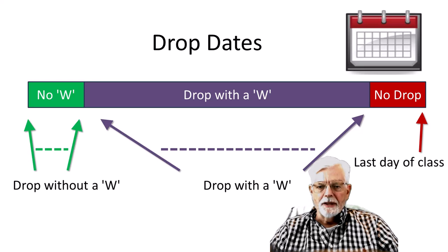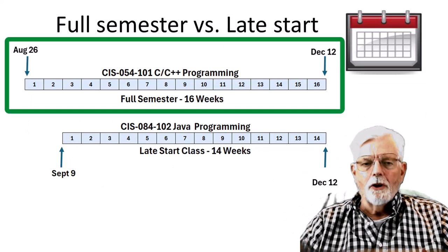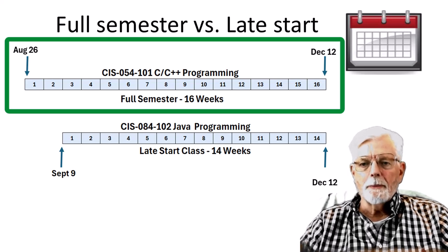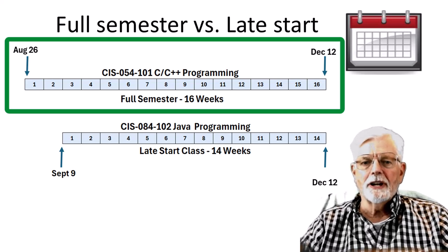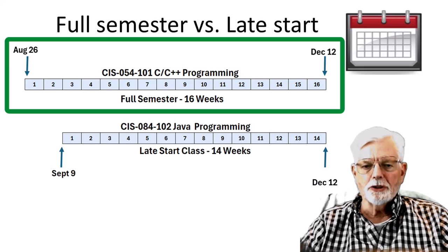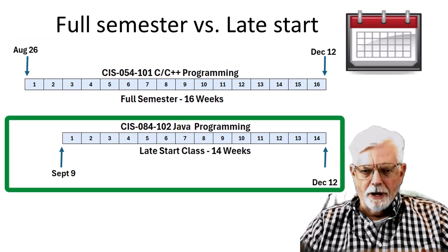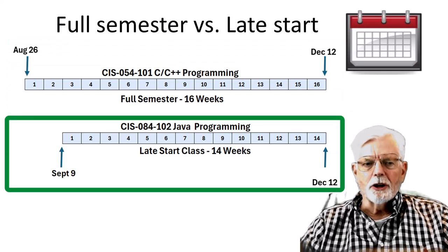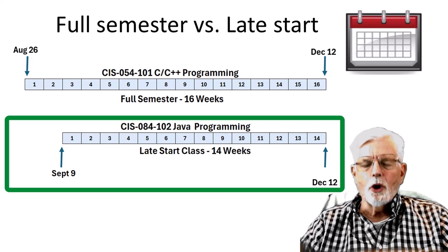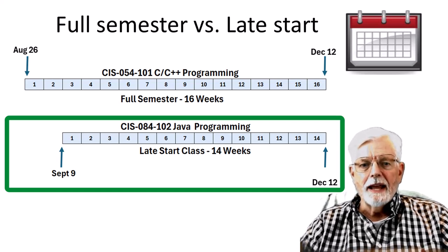Drop dates are based on a percentage of the number of days the class is taught. The Fall 2024 C C++ programming class is a full semester class with 16 weeks of instruction. It starts on August 26th and ends on December 12th. The Java programming class is a late start class and is only 14 weeks long. It starts on September 9 and also ends on December 12th.